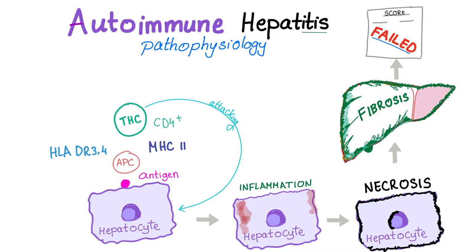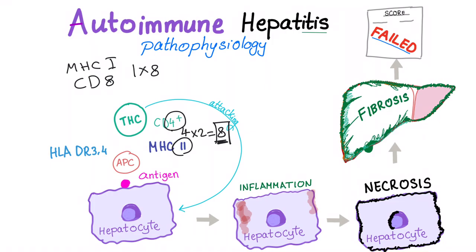Remember that MHC class 2 interacts with CD4. There is a mnemonic: the product is always 8, so 4 times 2 equals 8. This helps you remember that CD4 interacts with MHC class 2. The hepatocytes get attacked through these mechanisms initiated by CD4 cells, leading to inflammation, necrosis, possibly fibrosis, and liver cell failure.